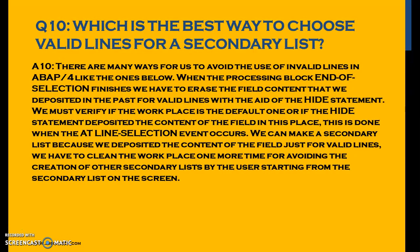What is the best way to choose valid lines for a secondary list? There are several ways to avoid using invalid lines. When the processing block END OF SELECTION finishes, we have to erase the field content deposited earlier for valid lines with the HIDE statement. We must verify if the workarea contains the default value or if the HIDE statement deposited the field content. This is done when the AT LINE-SELECTION event occurs — we can make a secondary list because we deposited content only for valid lines.